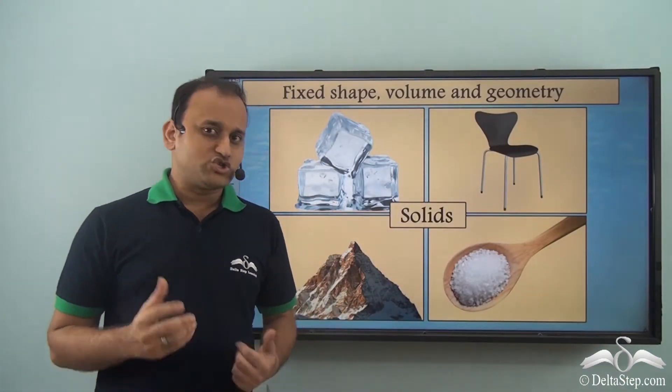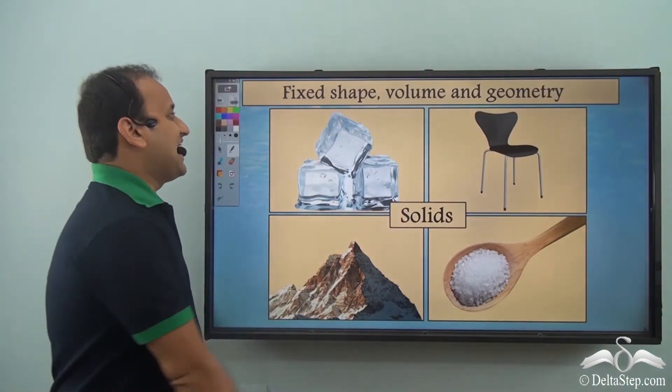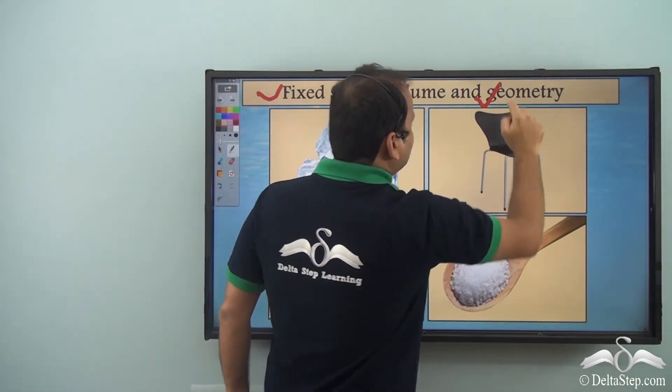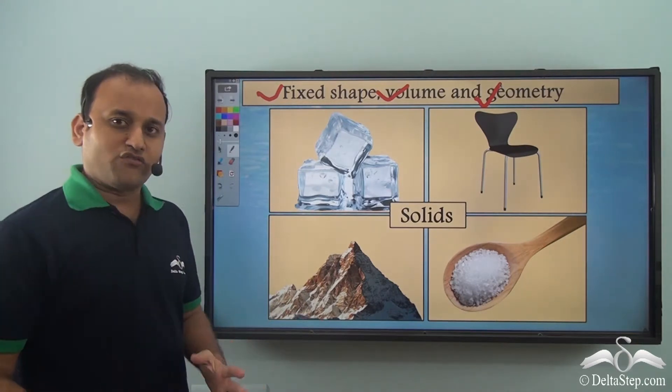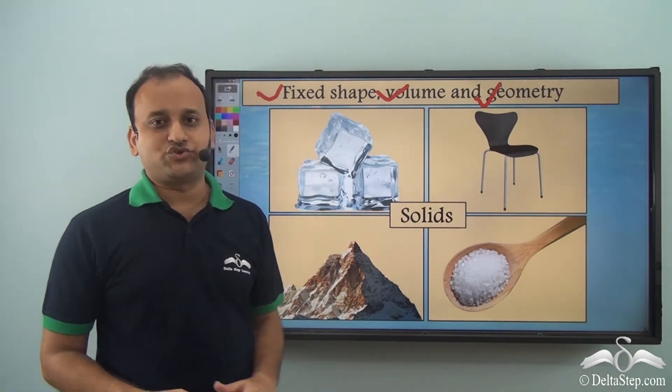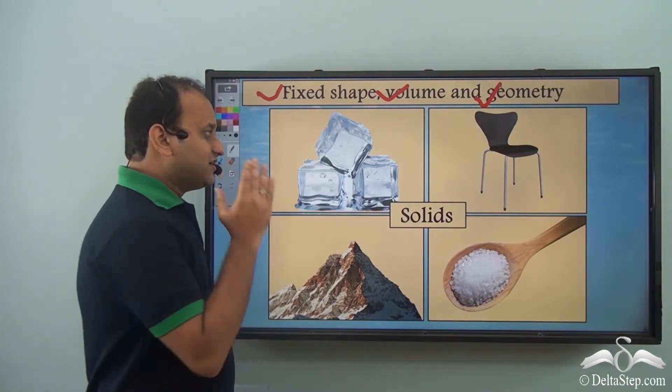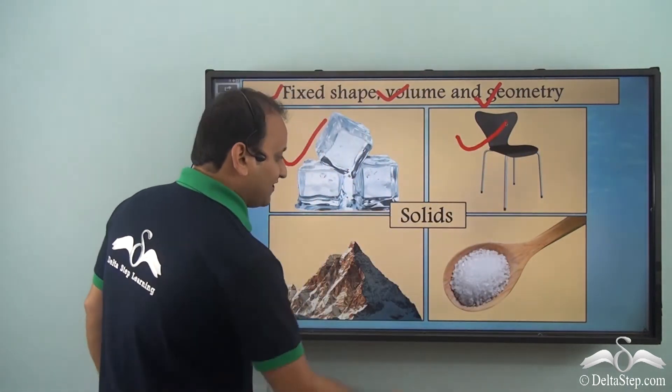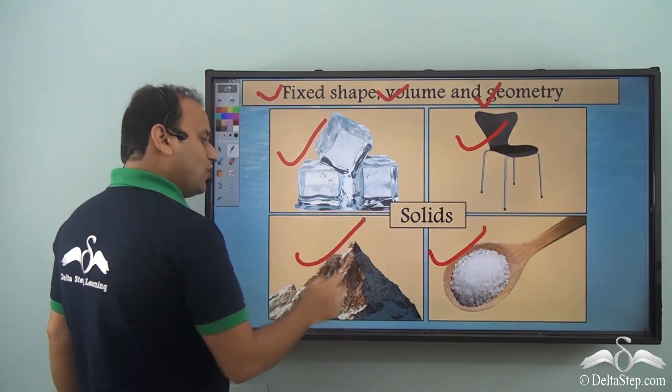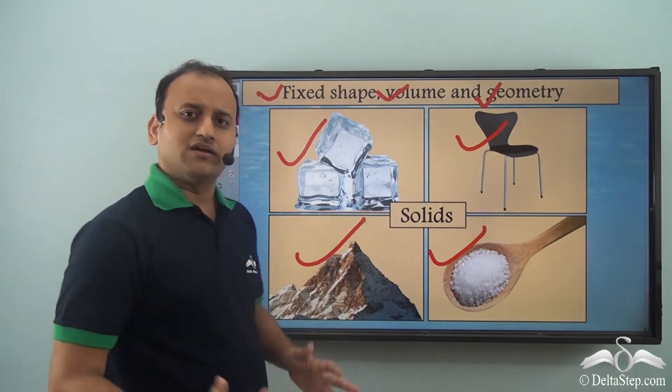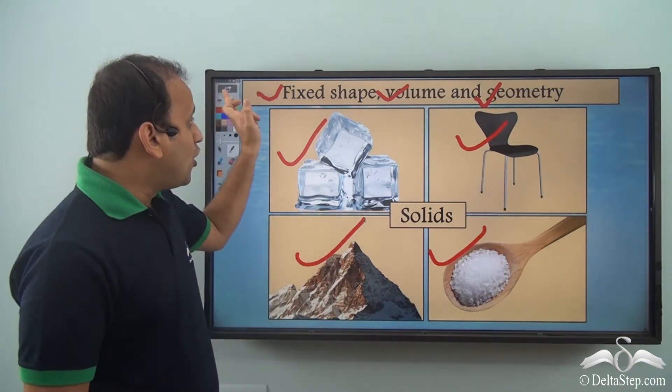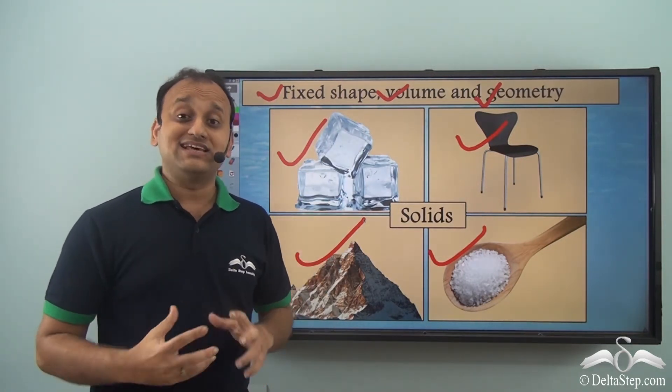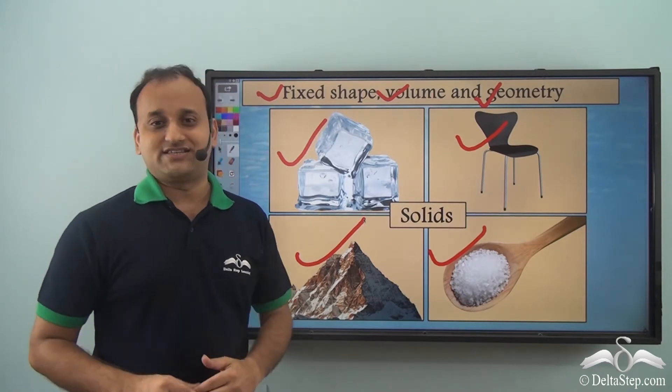So what did we learn about solids today? That they have a fixed shape, a fixed volume, and a fixed geometry. They are not flexible in any one of the three. They will always have a fixed shape, a fixed volume, and a fixed geometry. So whichever thing you take, a solid will always show all these three properties, and that is why they are called solids and they are different from gases or liquids.